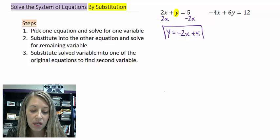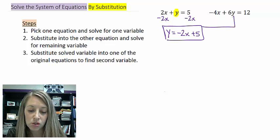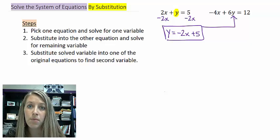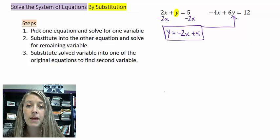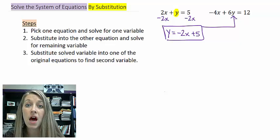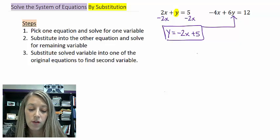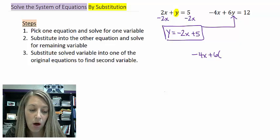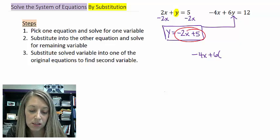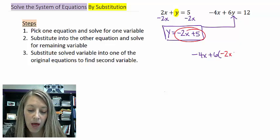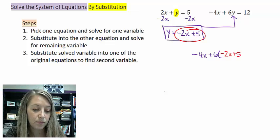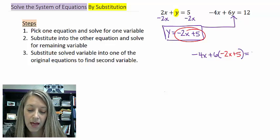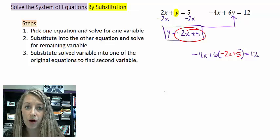What I'm going to do with that then is I'm going to substitute it into the y in my other equation. Make sure you always substitute it in the other equation, otherwise it defeats the purpose of what we're doing. So that gives me negative 4x plus 6 times my y. Now I am substituting in this here, negative 2x plus 5. And that is equivalent to 12.